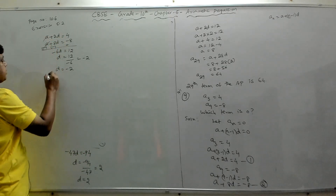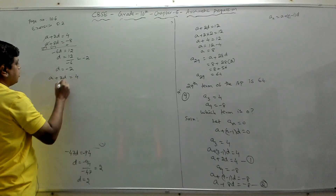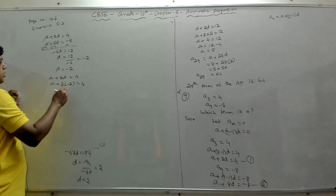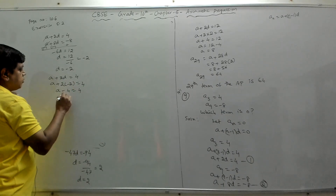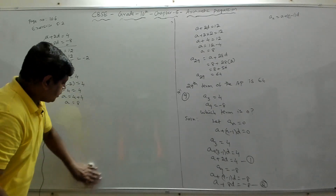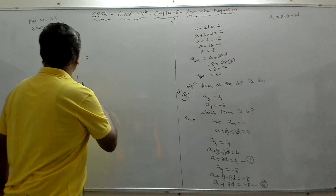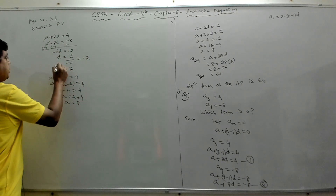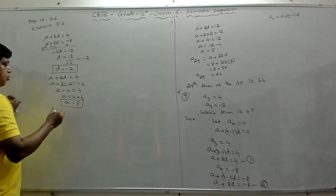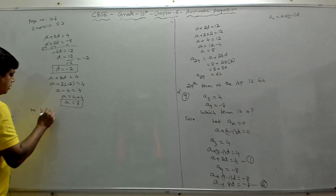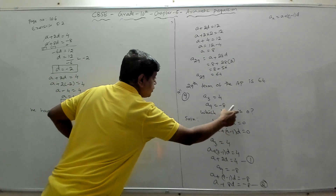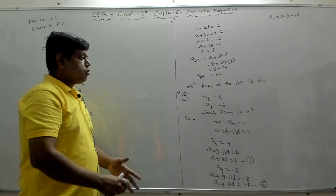Substituting d = −2 into equation 1: a + 2(−2) = 4, so a − 4 = 4, giving a = 8. Now substitute a = 8 and d = −2 into a + (n−1)d = 0: 8 + (n−1)(−2) = 0.